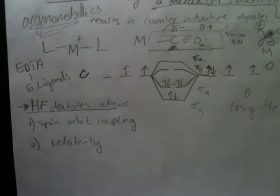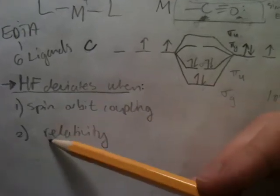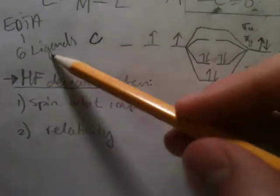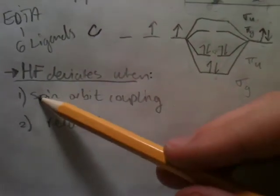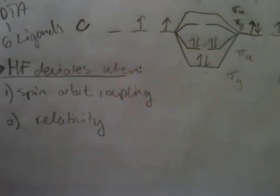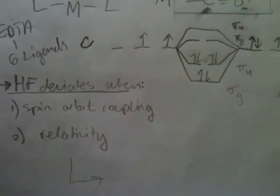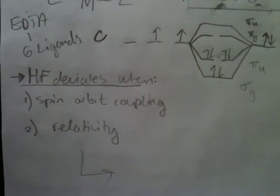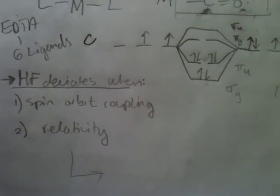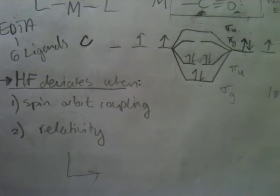That's where these bonding orbitals tie in with an interesting concept like pi backbonding. This has a lot of interesting applications in organometallics — I'll recommend that course again. As an unrelated side note, the Hartree-Fock approximation deviates when spin-orbital coupling occurs and there's relativity, which I can also explain later. Thank you.